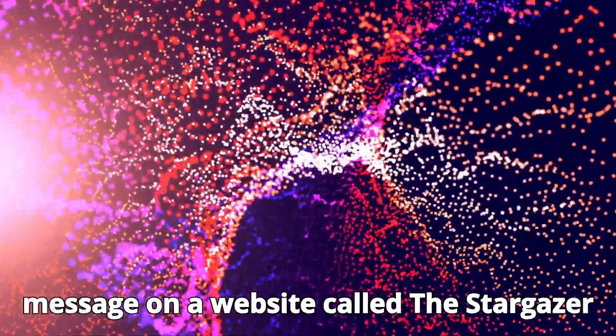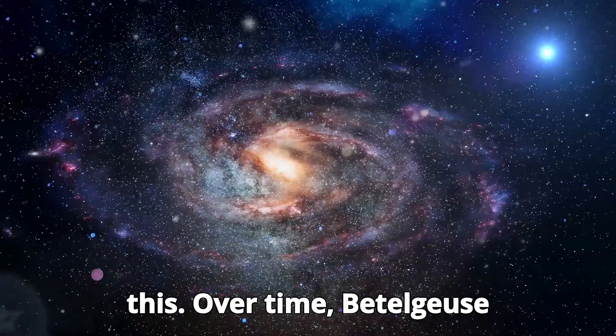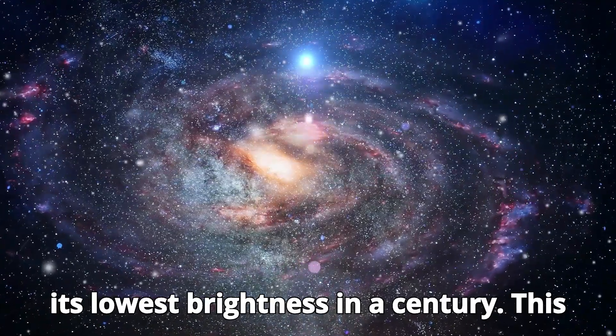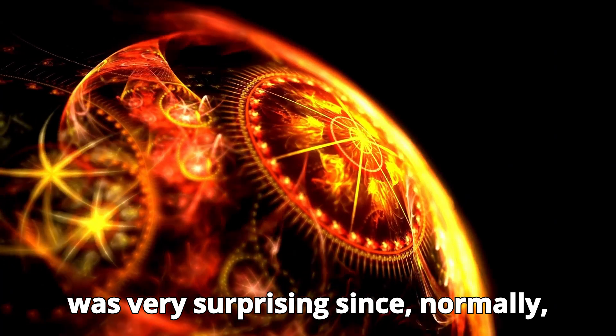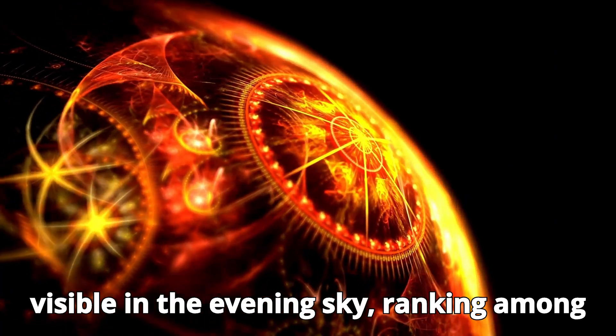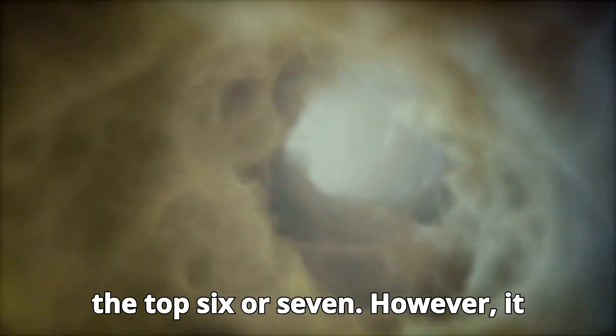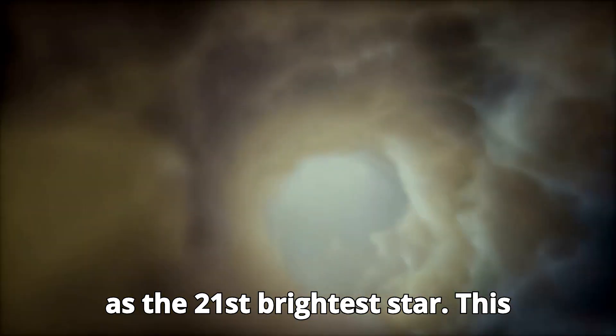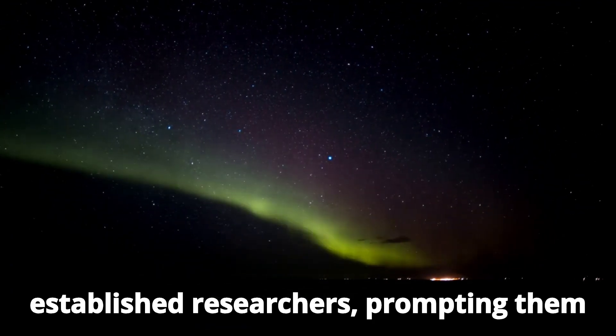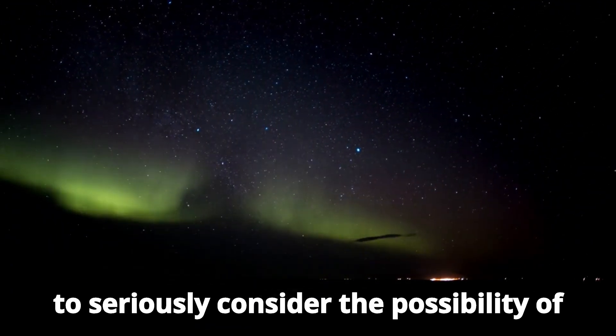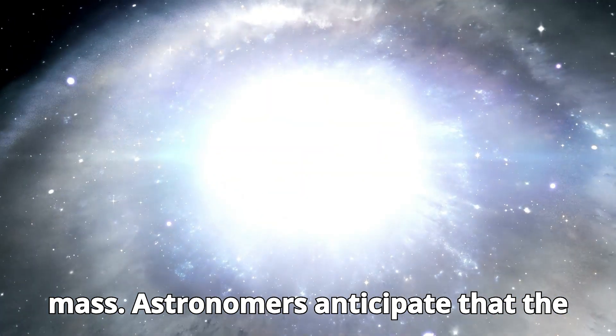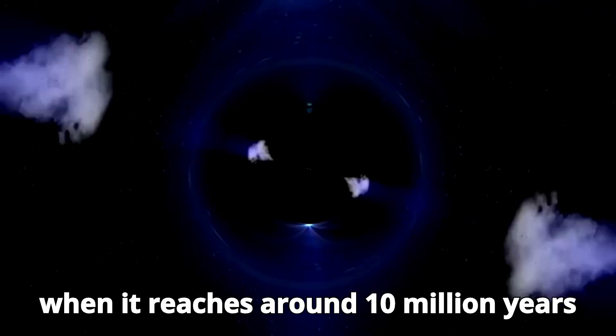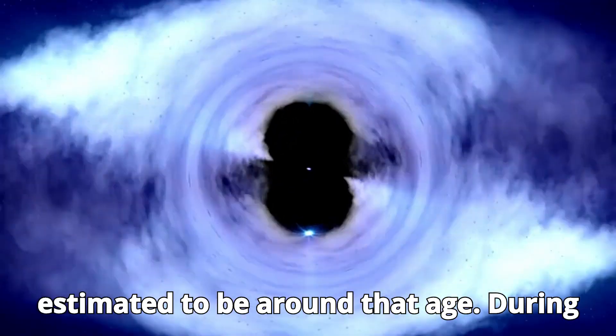They posted a message on a website called the Stargazer Wire to inform other astronomers about this. Over time, Betelgeuse continued to get even fainter, reaching its lowest brightness in a century. This was very surprising since, normally, Betelgeuse is one of the brightest stars visible in the evening sky, ranking among the top six or seven. However, it had dropped significantly and now ranked as the 21st brightest star. This surprising change caught the attention of established researchers, prompting them to seriously consider the possibility of Betelgeuse going supernova due to its mass. Astronomers anticipate that the red supergiant star will go supernova when it reaches around 10 million years of age. At present, Betelgeuse is estimated to be around that age.